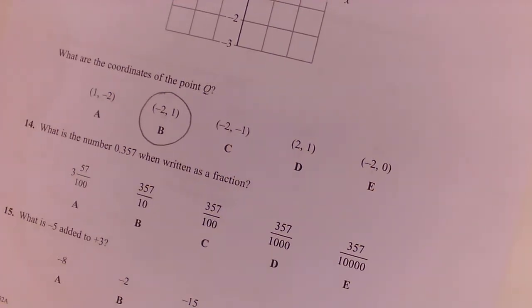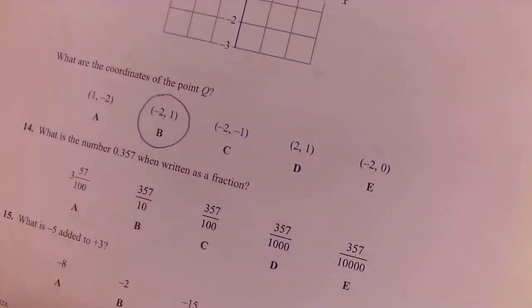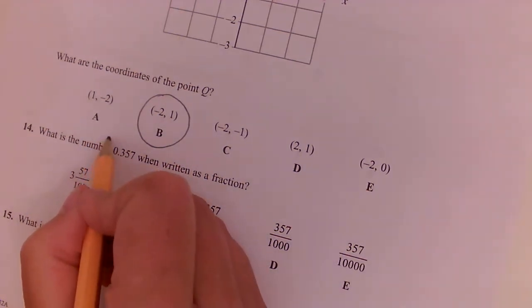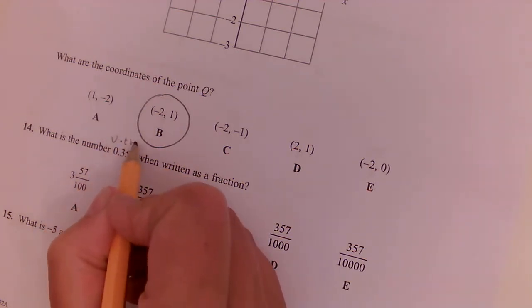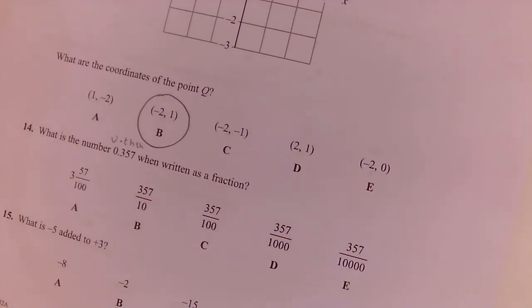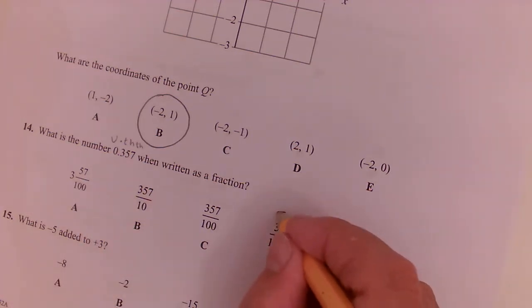Question 14. What is the number written as a fraction? So you write, remember that we had the units, then the tenths, then the hundredths, then the thousandths. You might remember that from when you were little. So that one is D.